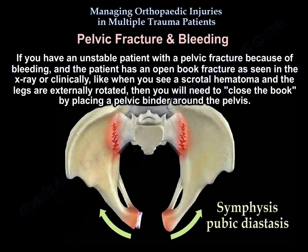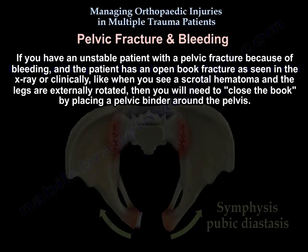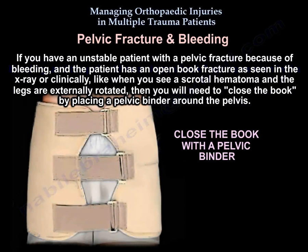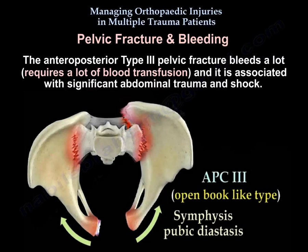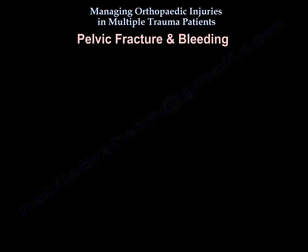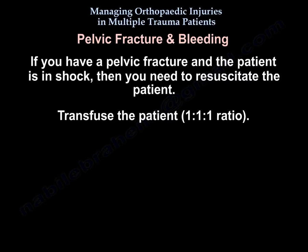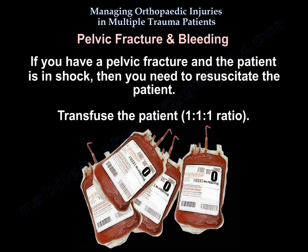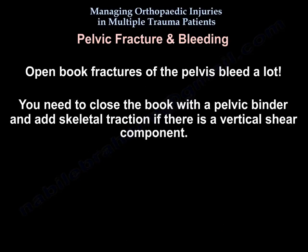If you have an unstable patient with a pelvic fracture because of bleeding and the patient has an open-book fracture, as seen on x-ray or clinically — such as scrotal hematoma and legs externally rotated — you will need to close the book by placing a pelvic binder around the pelvis. The AP type 3 pelvic fracture bleeds a lot, requires significant blood transfusion, and is associated with abdominal trauma and shock. You need to resuscitate and transfuse the patient 1 to 1 to 1. For an open-book fracture, close the book with a pelvic binder and add skeletal traction if there is a vertical shear component.